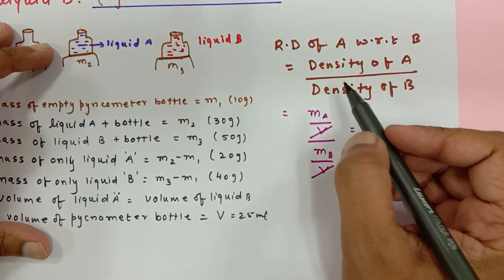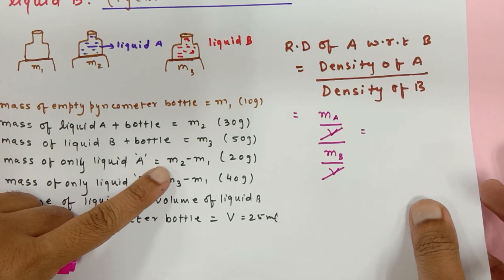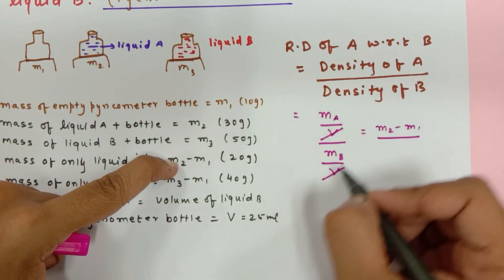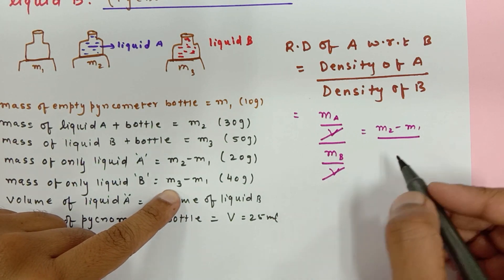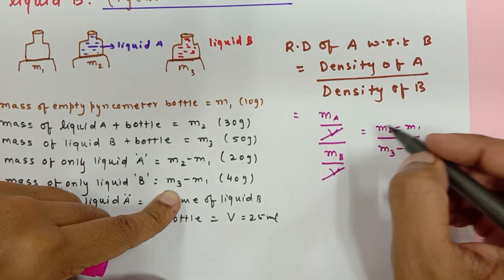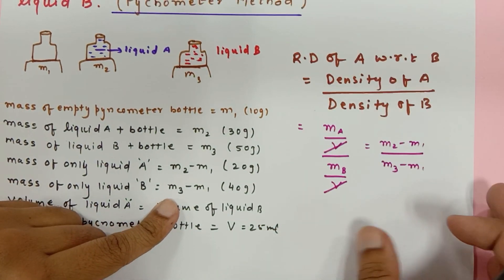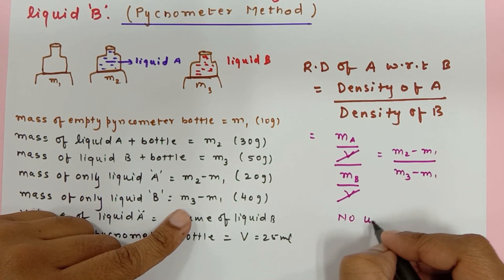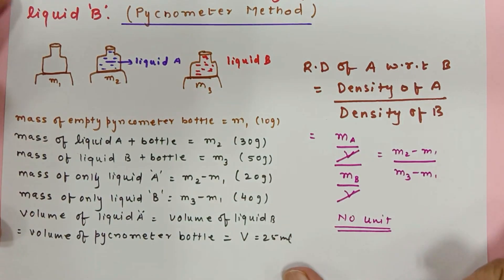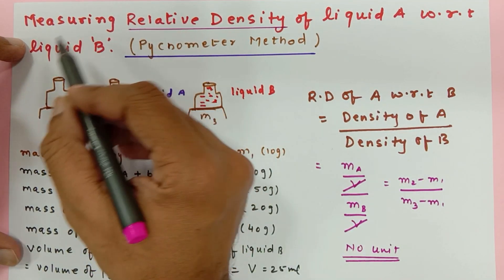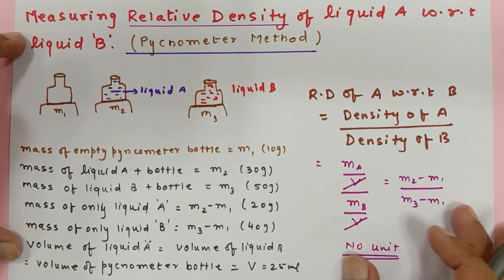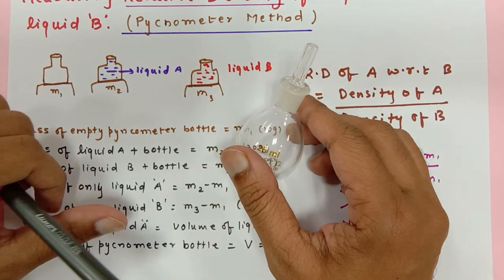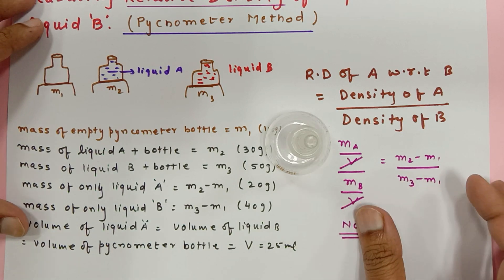So the relative density of liquid A with respect to liquid B simplifies to: mass of only liquid A divided by mass of only liquid B, which is (M2 − M1) divided by (M3 − M1). Since both are in grams, relative density has no unit. If instead of liquid B you consider water, then this relative density becomes specific gravity, because measuring density relative to water gives specific gravity. Hopefully you have understood the experiment — please comment any doubts below. Thank you for watching!